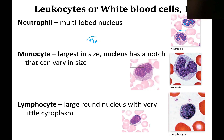Neutrophils are going to have different lobes to their nucleus. They're the most numerous and the easiest to find on the slides.